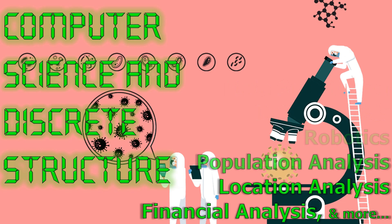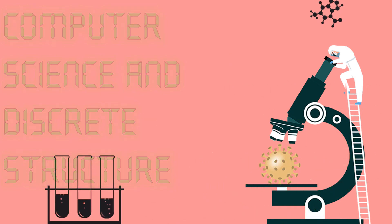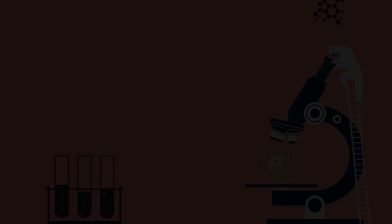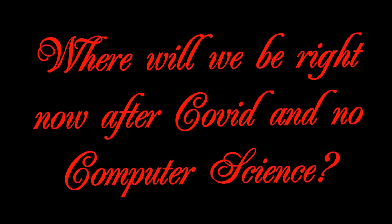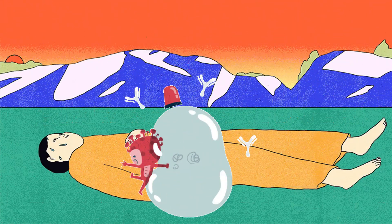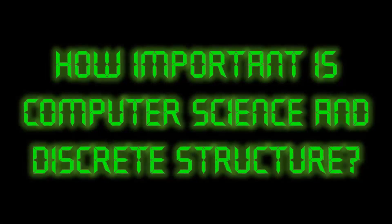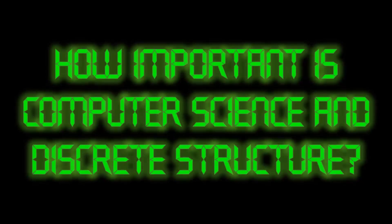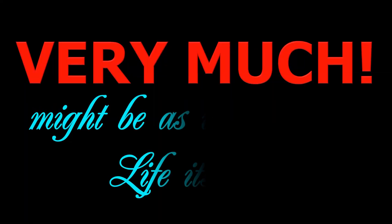Imagine if we had no computer science and discrete structure when the COVID-19 pandemic happened. Where would human beings be right now? Probably at the brink of extinction. So how important is computer science and discrete structure in real life? Very much — almost as important as life itself.